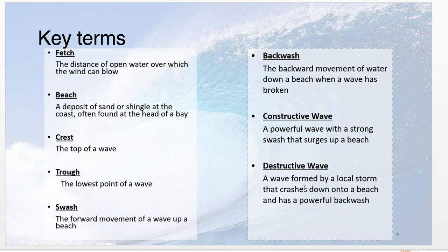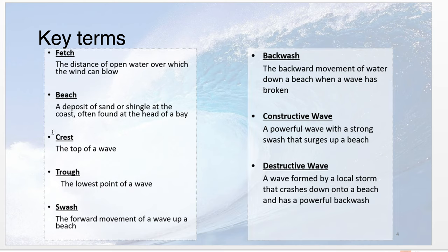Destructive waves could be formed by a local storm and drag sediment — shingle, sand, bits of rock — off the beach. Swash is the forward movement of a wave up the beach, and backwash is the backward movement. The crest of a wave is what surfers talk about. Obviously we know what a beach is, but there's a handy definition here in case you need one in the exam. You might want to pause the video and take a quick note of these key terms.